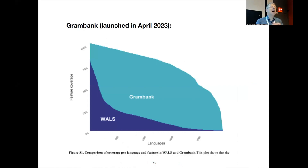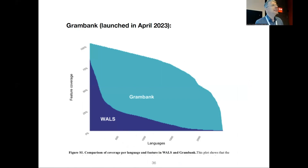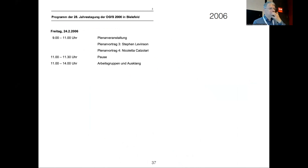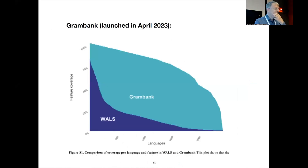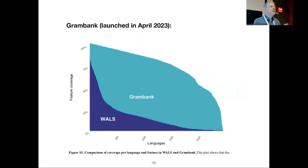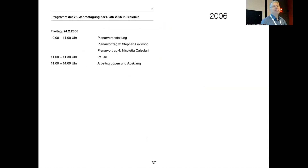Now we have GramBank, which is much bigger than WALS. But then what about all these other communities? My thinking is rather similar to Robert's. Russell mentioned 2010, when it was Russell and Quentin — but Steve Levinson was also involved early on. My first experience was in 2006, just a year after WALS had come out, at a DGFS annual meeting in Bielefeld, where Steve Levinson gave a plenary talk.